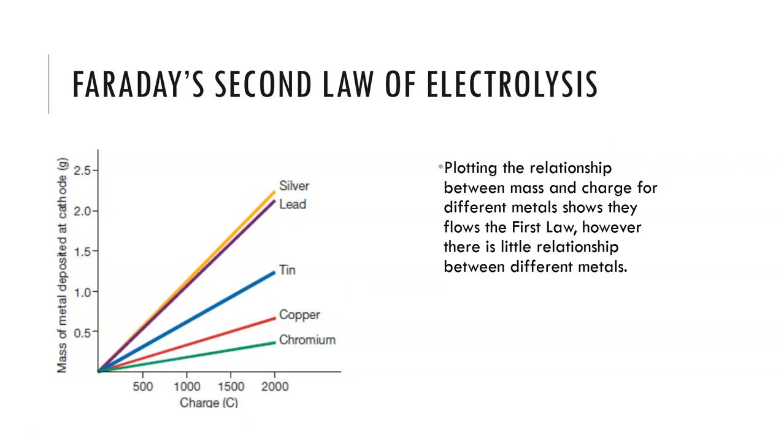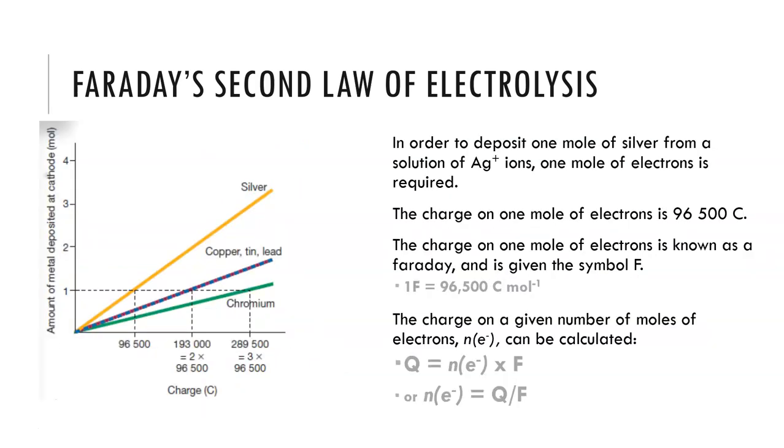However when we look at this when we compare different metals to each other we can see that mass and charge for different metals shows that we have this linear relationship but there is little relationship between each of the different metals. We can see that the mass certainly is increasing linearly for each metal but the metals have different masses. Of course this is because of the different charge and mass of the metals themselves.